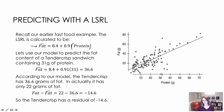I could look at the graph and find the 31 grams of protein, but I want to find out what my model predicts. So fat-hat equals 8.4 plus 0.91 times 31, because there are 31 grams of protein. Doing the math, I get 36.6. According to the model, there should be 36.6 grams of fat.